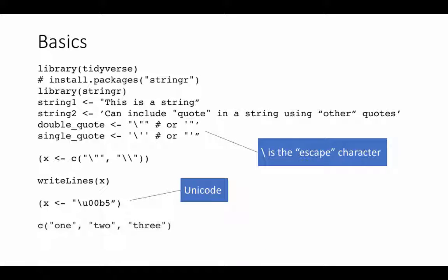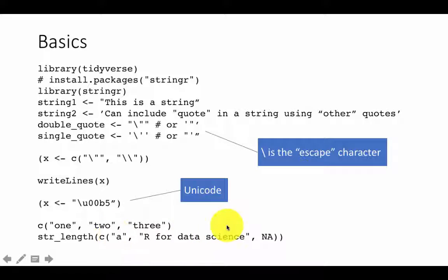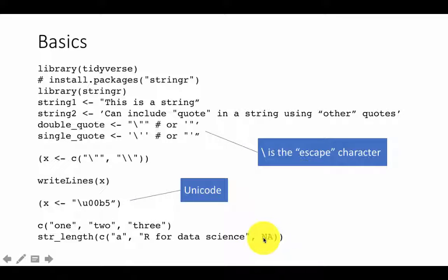We can look at some other functions. To find the length of a string, you use str_length, and you pass it a vector. For example, a vector of three elements: the character 'a', the string 'R for data science', and a missing value NA. What you get back is a vector of lengths — 1, the length of that string, and then NA. When you apply any function to NA, the result is NA because the value is unknown.